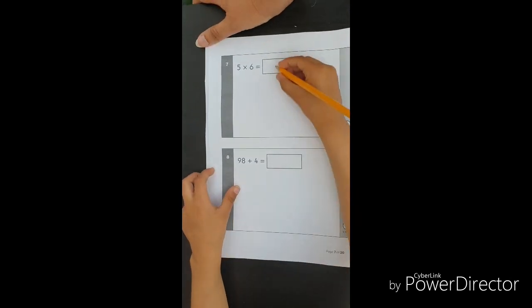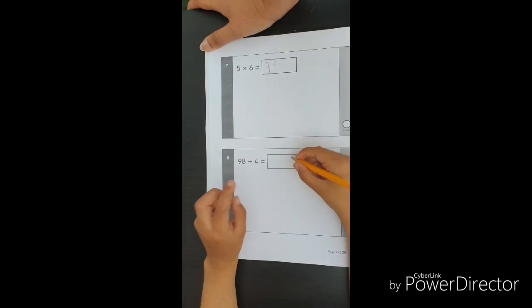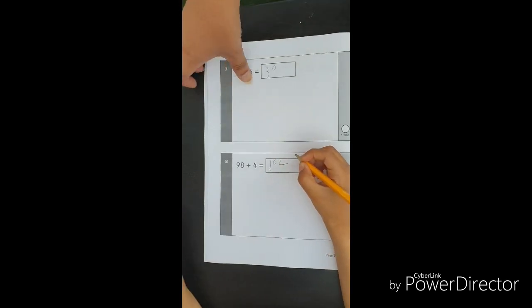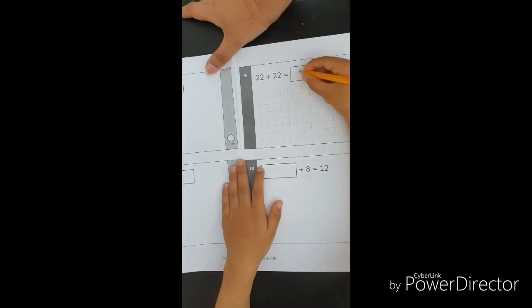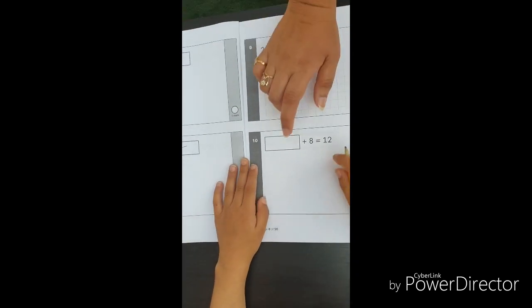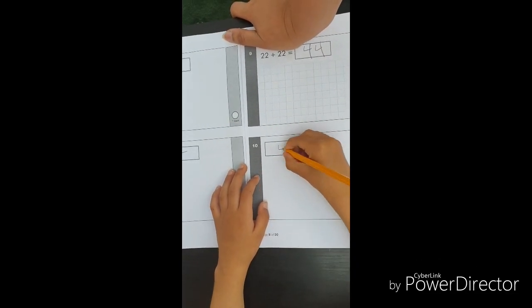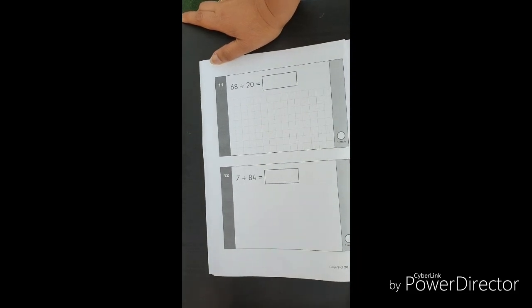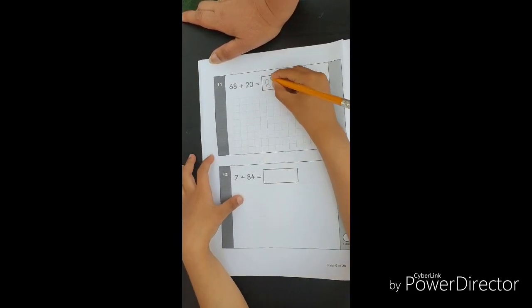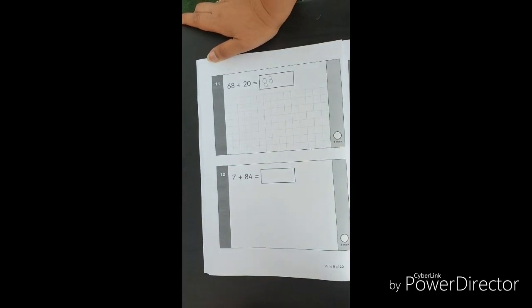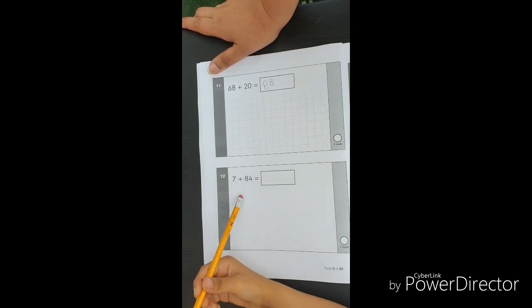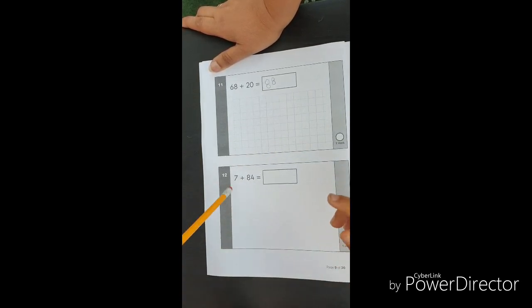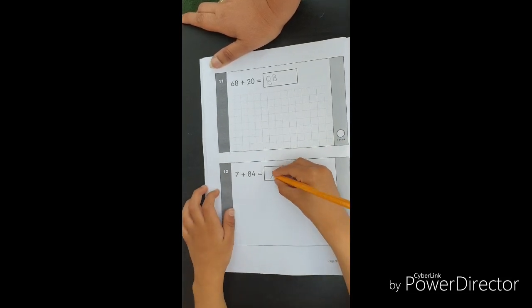Five times six is thirty. Ninety-eight plus four is one hundred and two. Twenty-two plus twenty-two is forty-four. Something plus eight equals twelve. Four. Sixty-eight plus twenty is eighty-eight. Seven plus eighty-four. Eighty-four. The seven would be ninety-one.